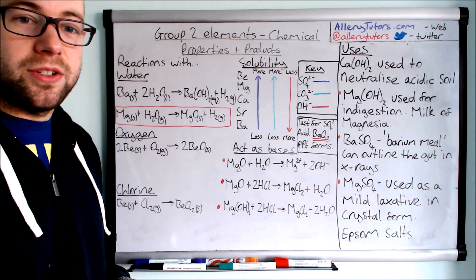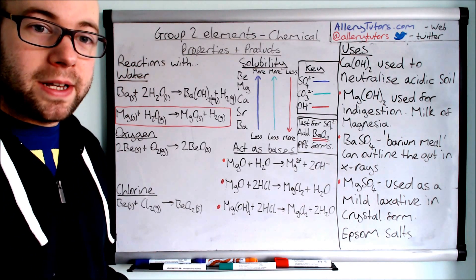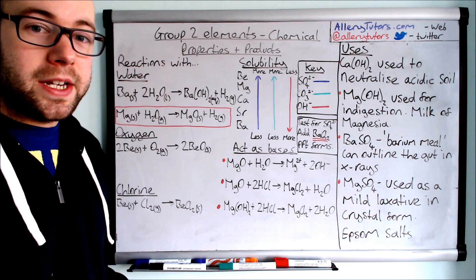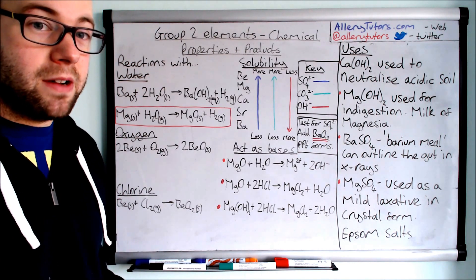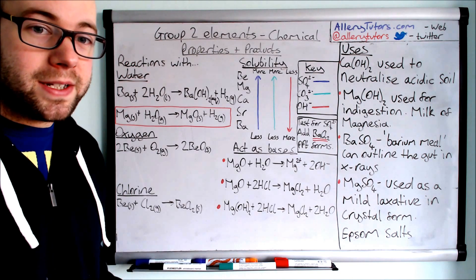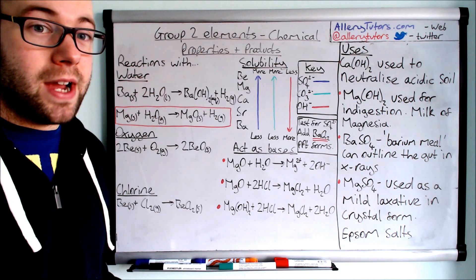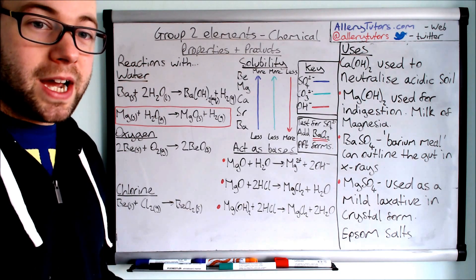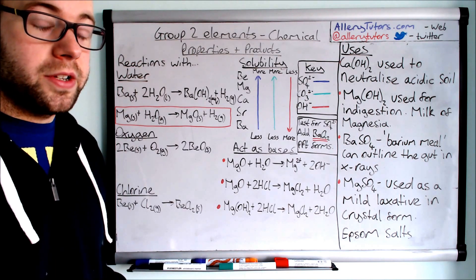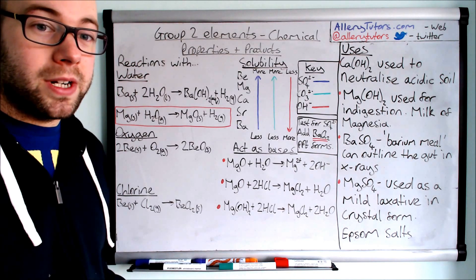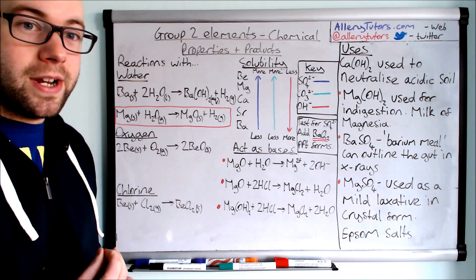We're going to start with the reactions with water. Like group 1 metals, group 2 metals can react with water, and as we go down the group they become more vigorous in their reactions, just like group 1 metals. At the top of the group, beryllium doesn't even react with water, whereas barium at the bottom is really reactive, although group 2 metals are not as reactive as their group 1 counterparts.